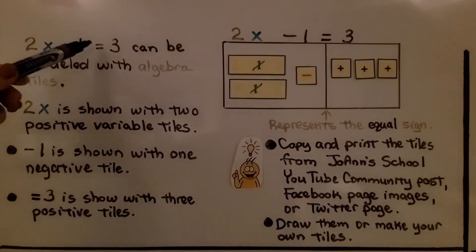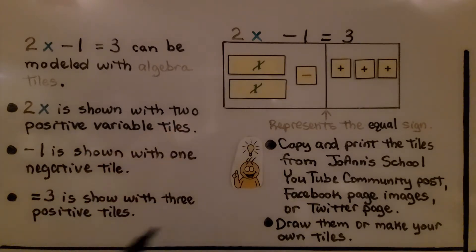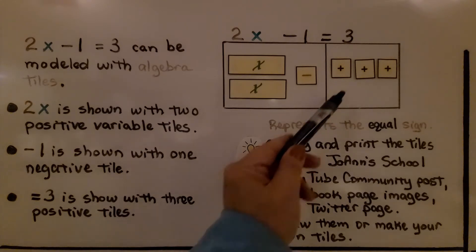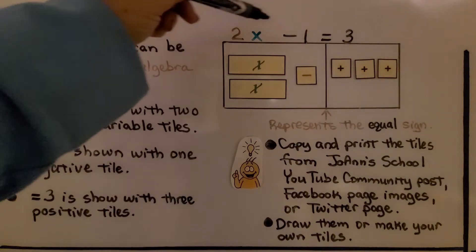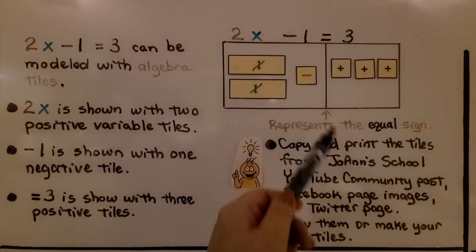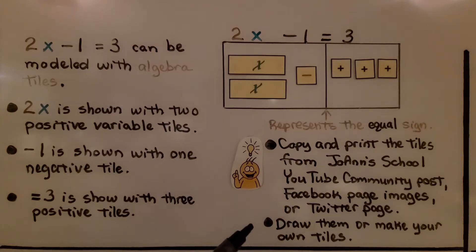The equation 2x minus 1 is equal to 3 can be modeled with algebra tiles. The 2x is shown with 2 positive variable tiles. The minus 1 is shown with 1 negative tile. The equals 3 is shown with 3 positive tiles, and the line between them represents the equal sign. You can copy and print the tiles from the Joanne School YouTube community post, the Facebook page images, or the Twitter page. You can also draw them yourself and make your own tiles.